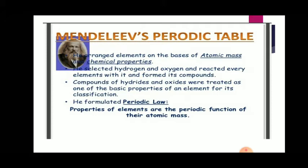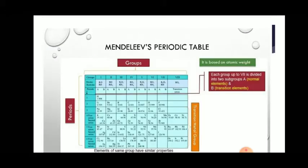The discussion of physical and chemical properties was carried over from yesterday. According to that basis he arranged elements in the periodic table. He selected hydrogen and oxygen and reacted them with every element. In this periodic table he listed the oxides and hydrides — the compound and formula that would form. So RO means the oxide with oxygen, and RH means the hydride with hydrogen.